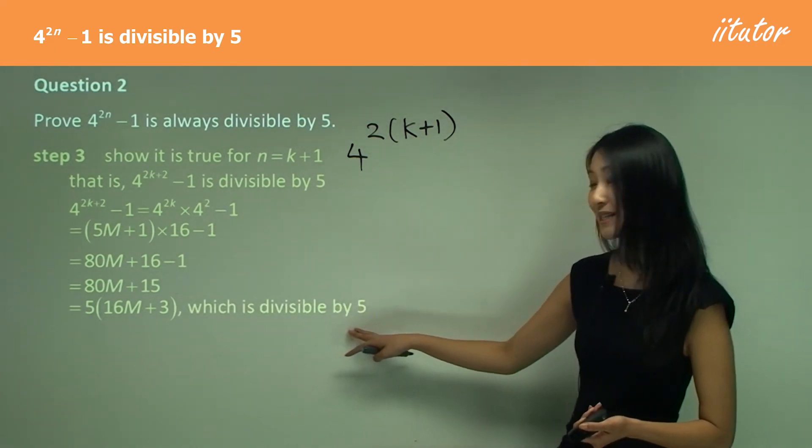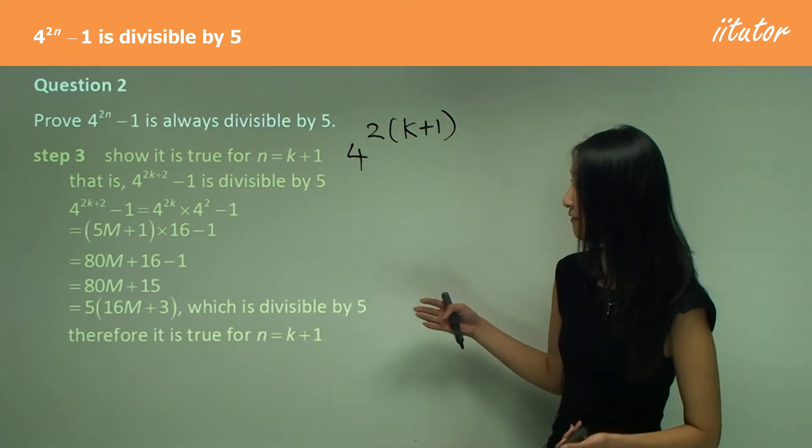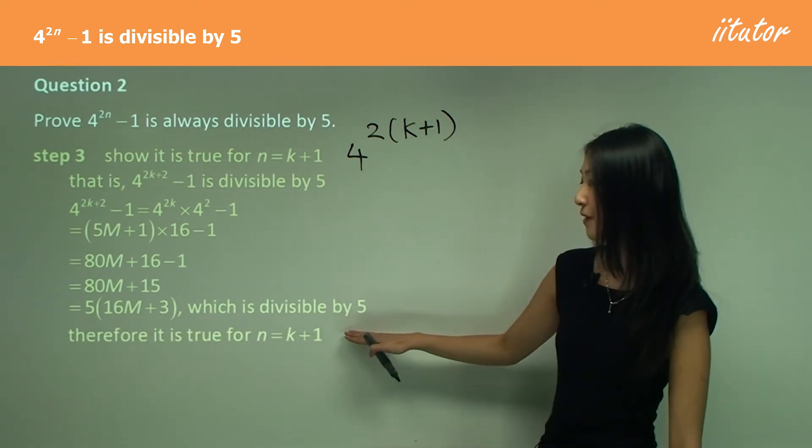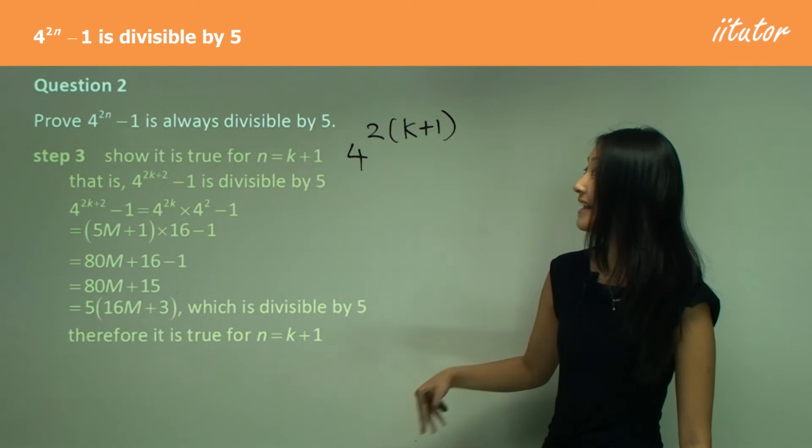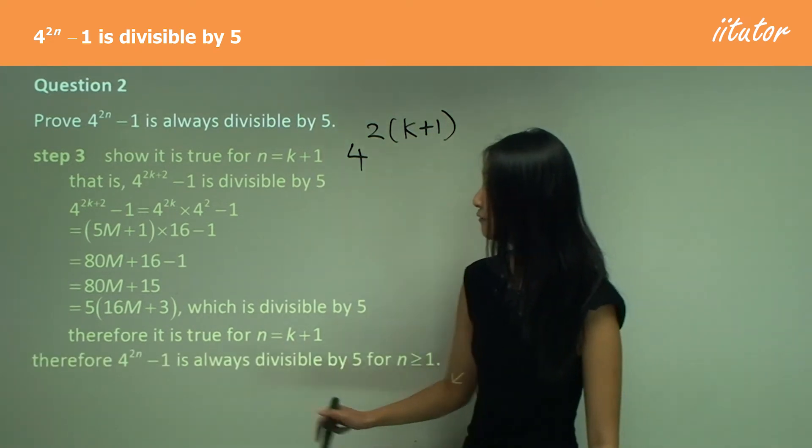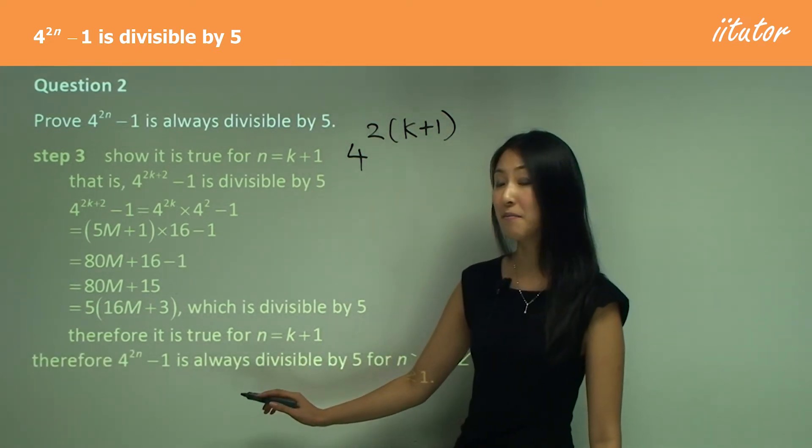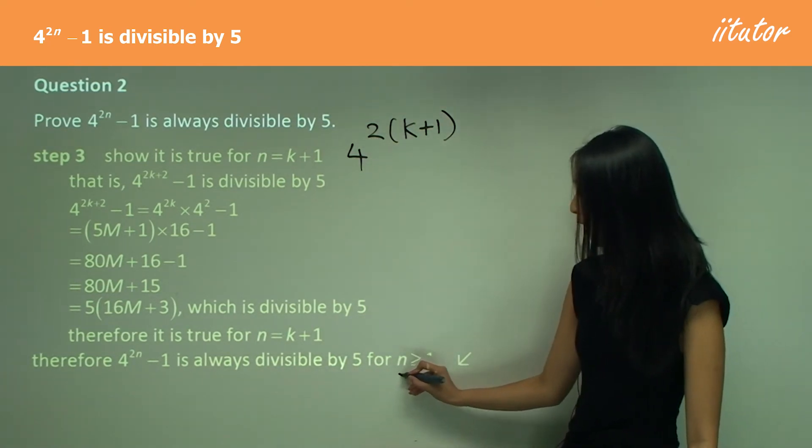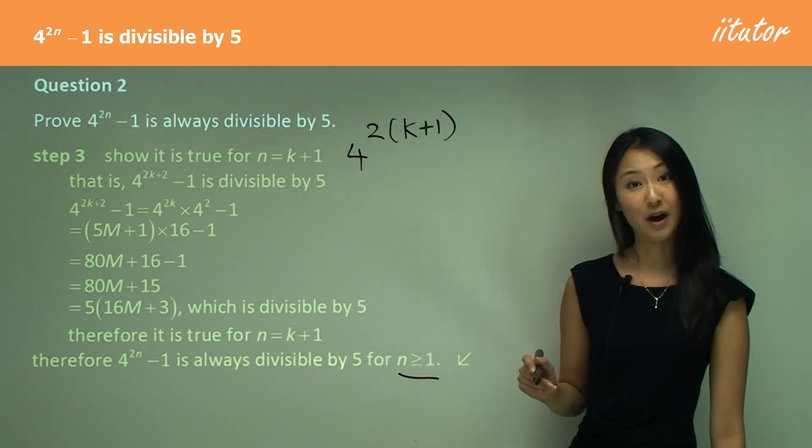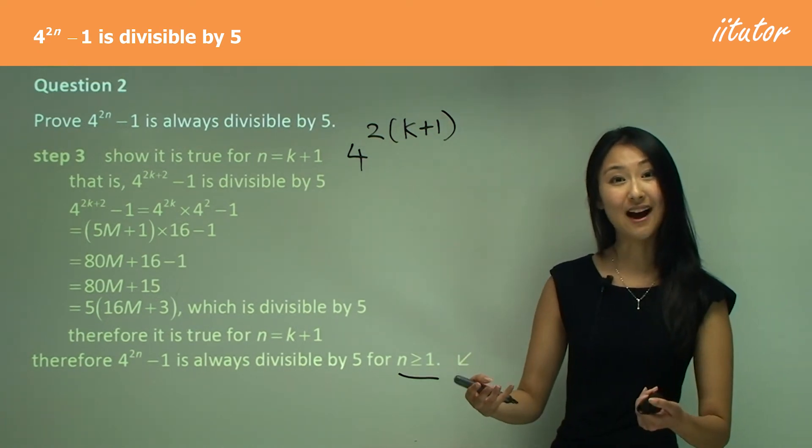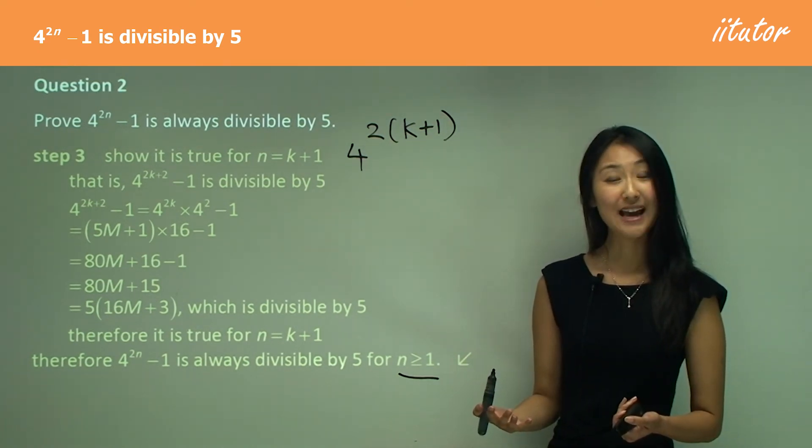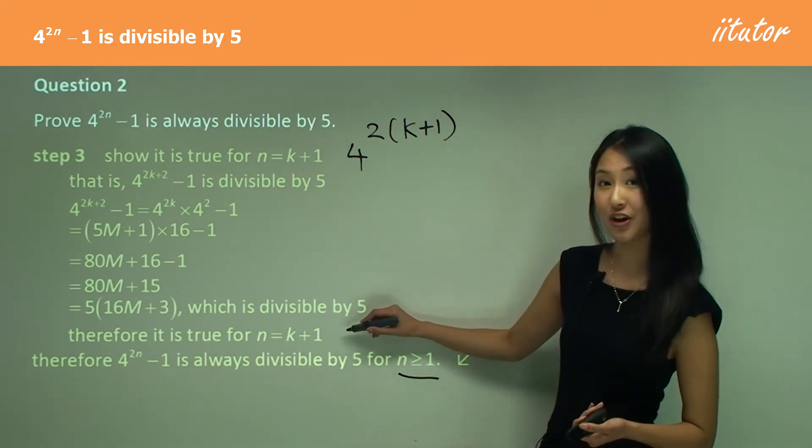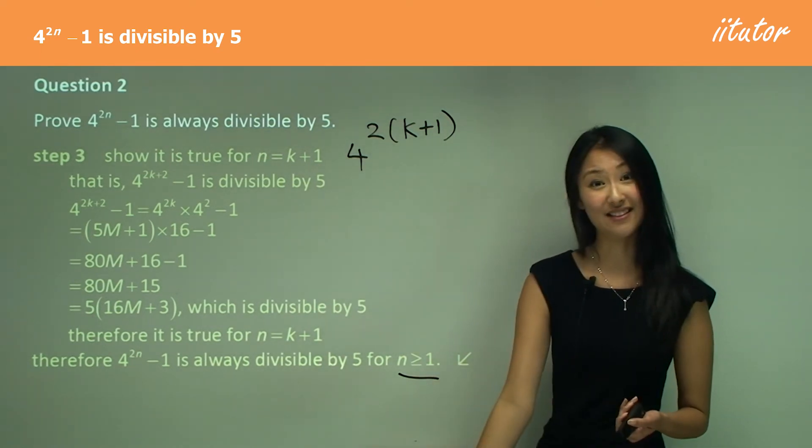Therefore, this must be true for n equals k plus 1. Now in our conclusion, we would write: therefore, 4 to the power of 2n minus 1 is always divisible by 5 for n is greater than or equal to 1. Remember how we worked out at the start it didn't work for n equals 0? It only worked for n equals 1, and then this shows us any number greater than that.